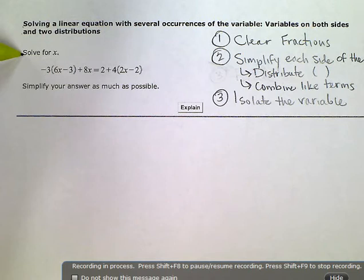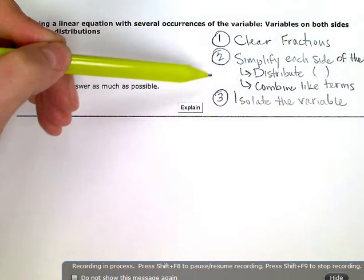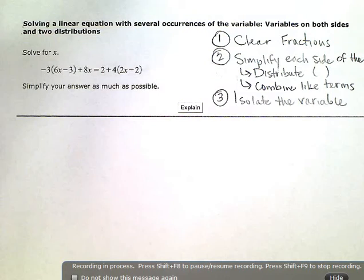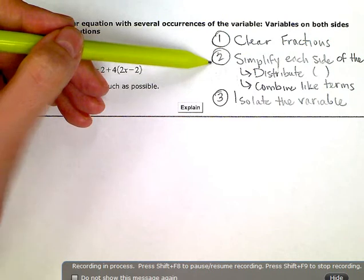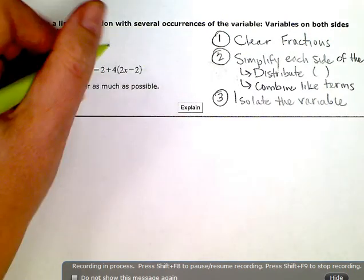I always go through three steps when solving equations. The first one is to clear any fractions. I don't have any fractions in this one, so I can move along to step two. Simplify each side of the equals separately.